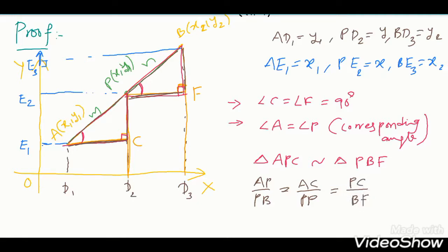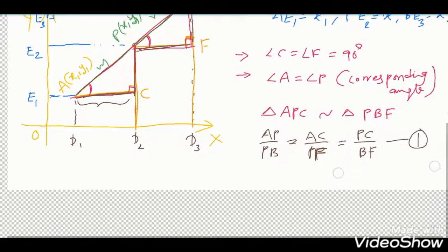When two triangles are similar, the corresponding sides are in the same ratio. Using this concept we will find x and y values. The corresponding sides are: AP corresponds to PB, AC corresponds to PF, and PC corresponds to BF. This is equation one.